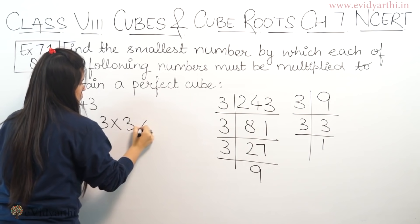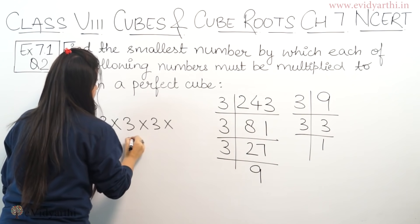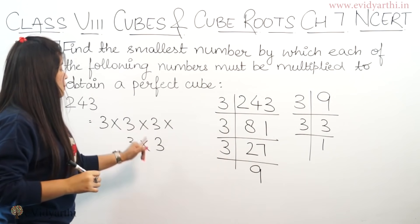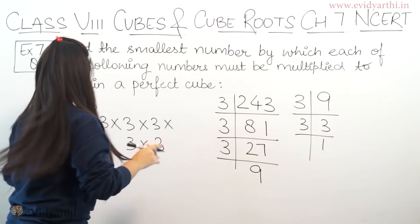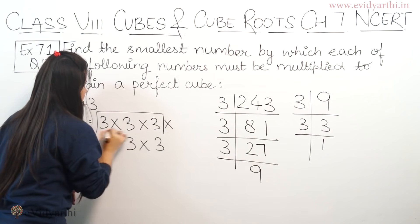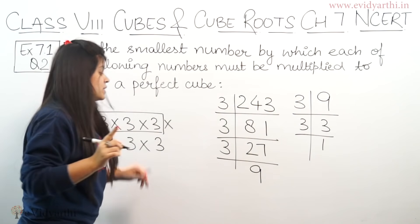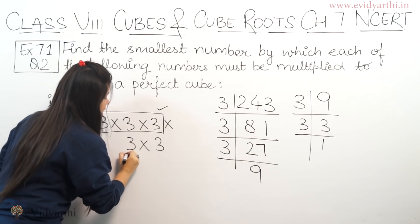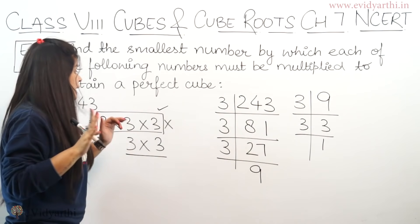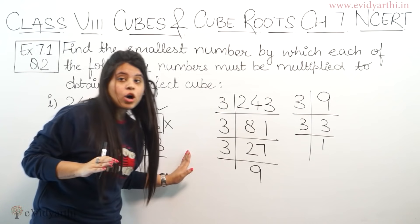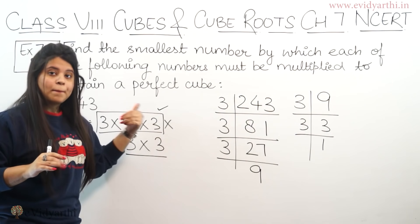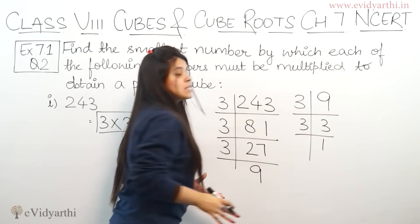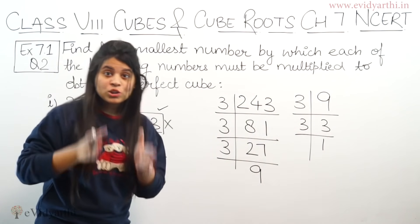Now let's write it down: 3 × 3 × 3 × 3 × 3. You can see 3 appears 5 times here. One triplet can be formed — that is one group of three. But the second group has 3 appearing only twice. This means if one more 3 were multiplied, it would be a perfect cube. So the number that must be multiplied is 3.